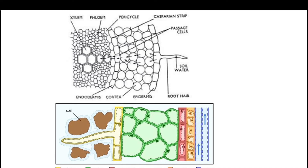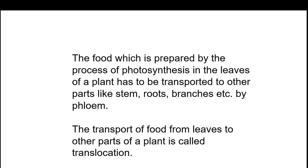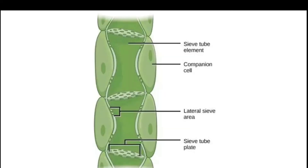Now let's see how the transport of food and other substances takes place in plants. The food prepared by photosynthesis in the leaves has to be transported to other parts like stem, roots, and branches, and it is done by another tissue known as phloem. The transport of food from leaves to other parts of the plant is called translocation. Here you can see the components of phloem — a sieve tube element with a companion cell present at its side.